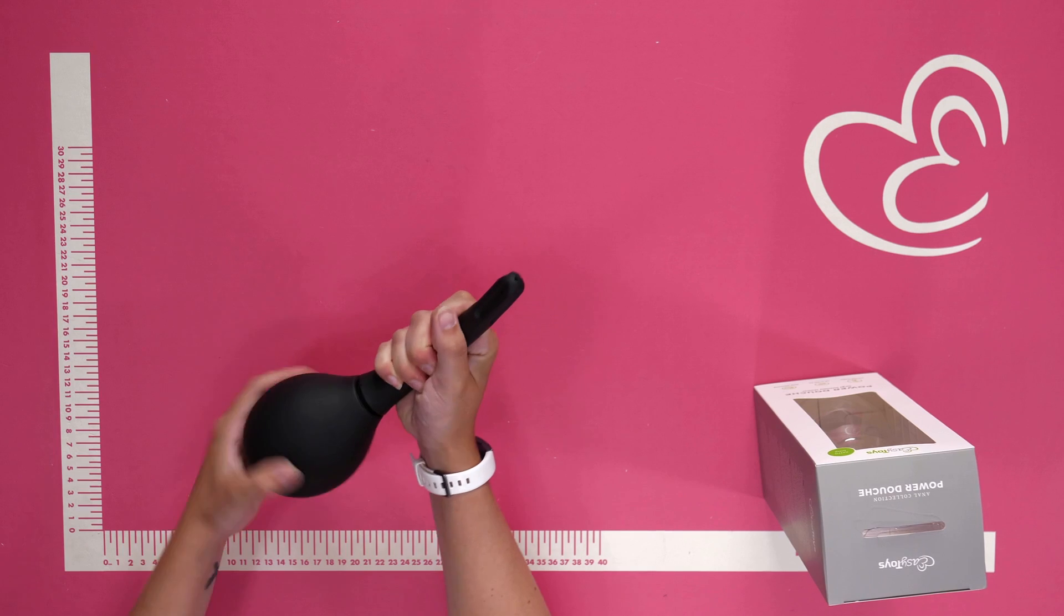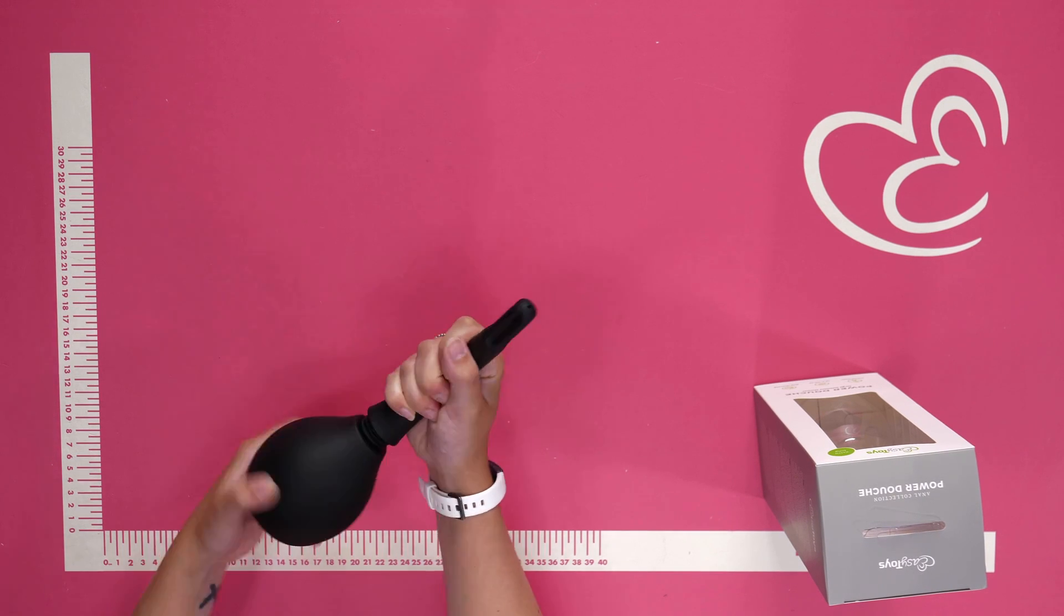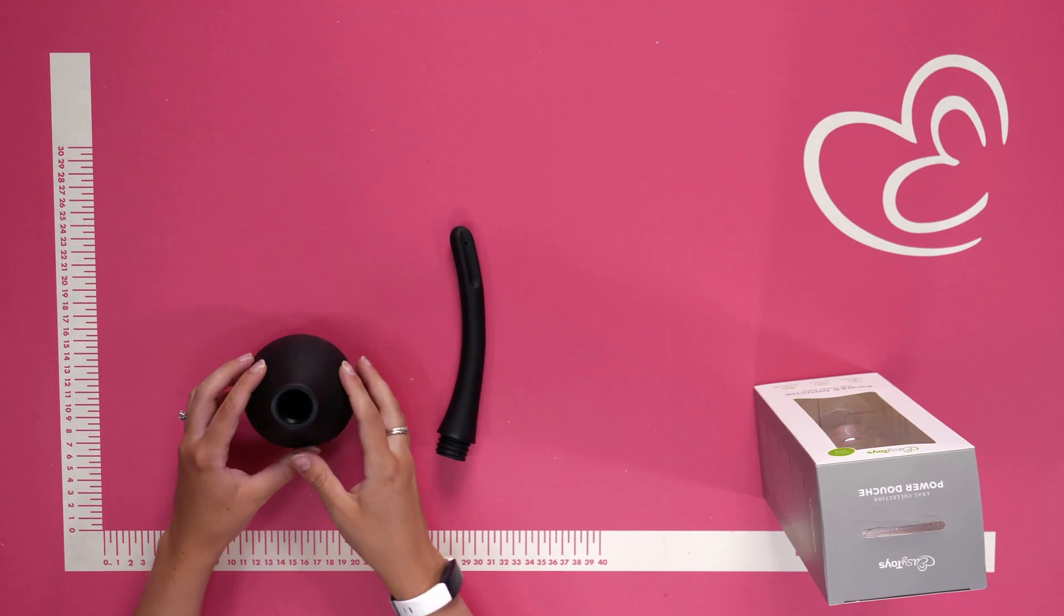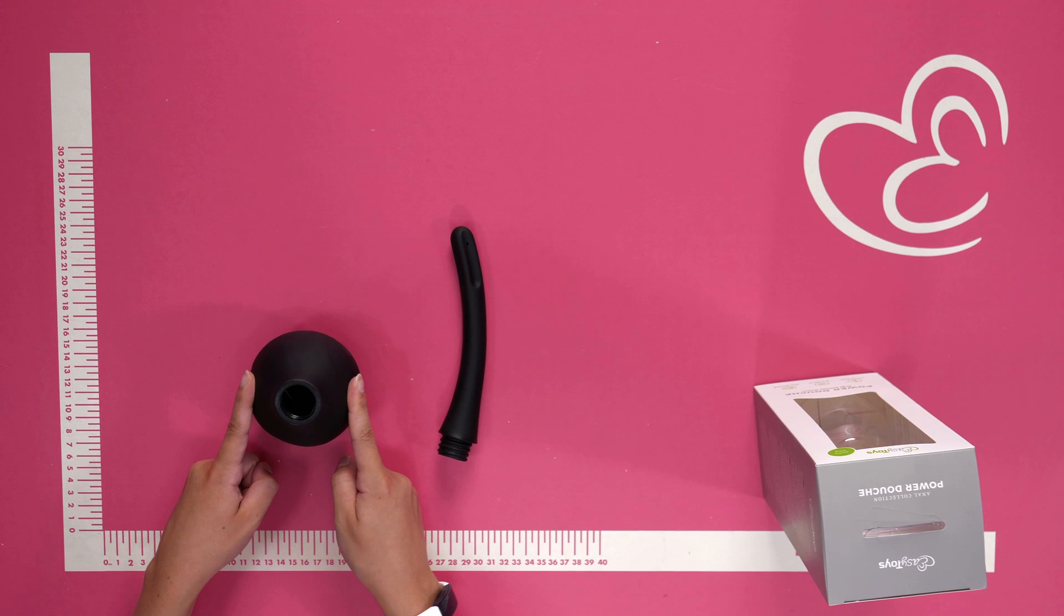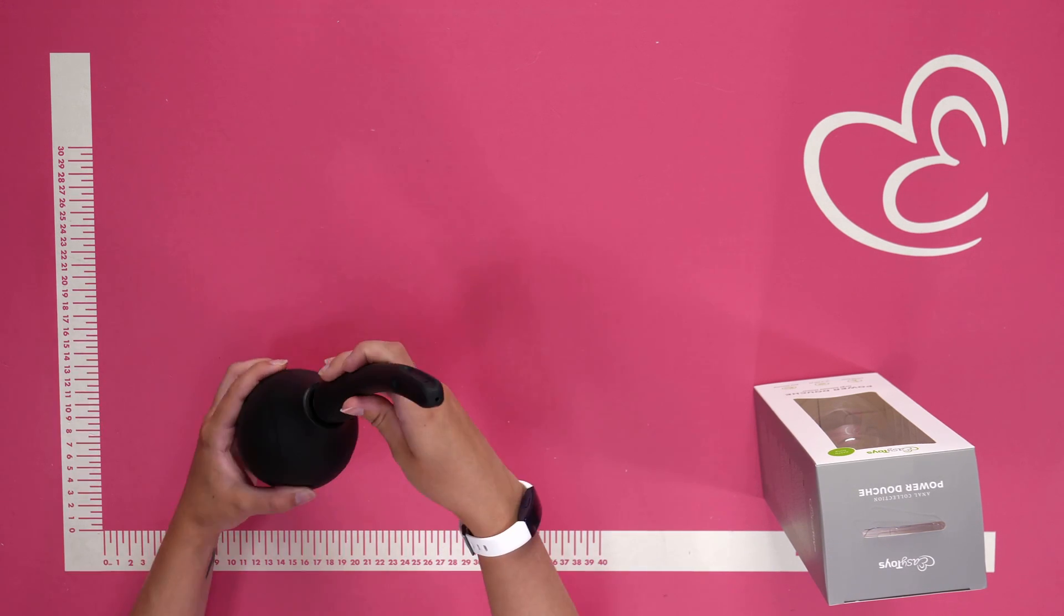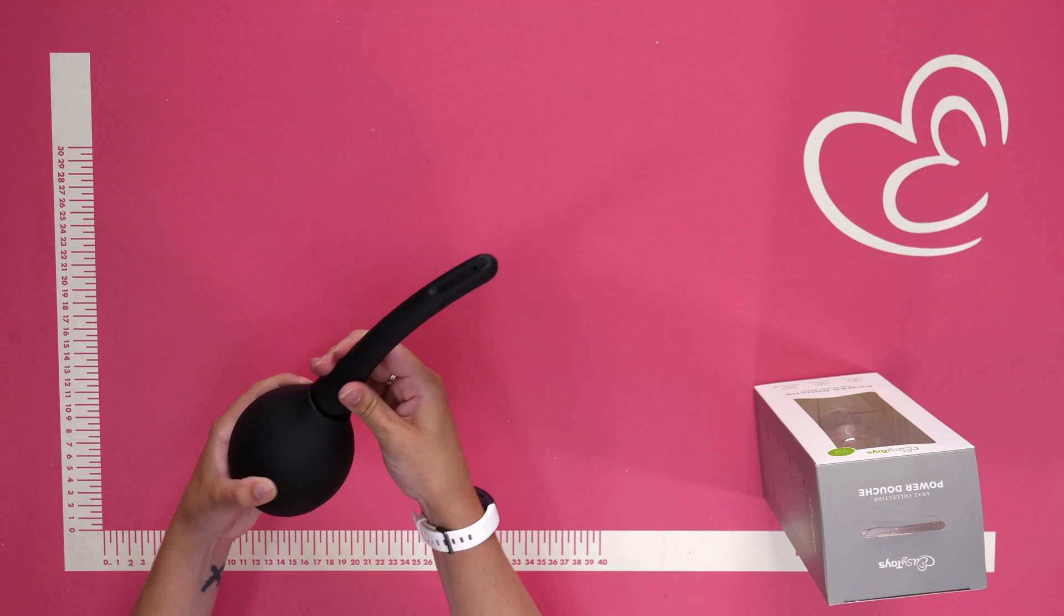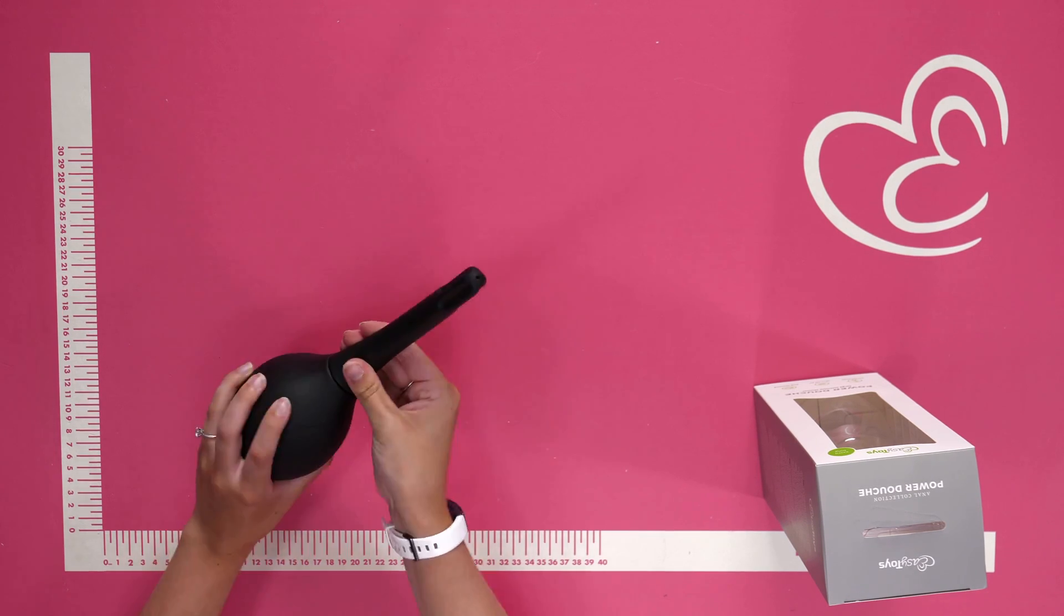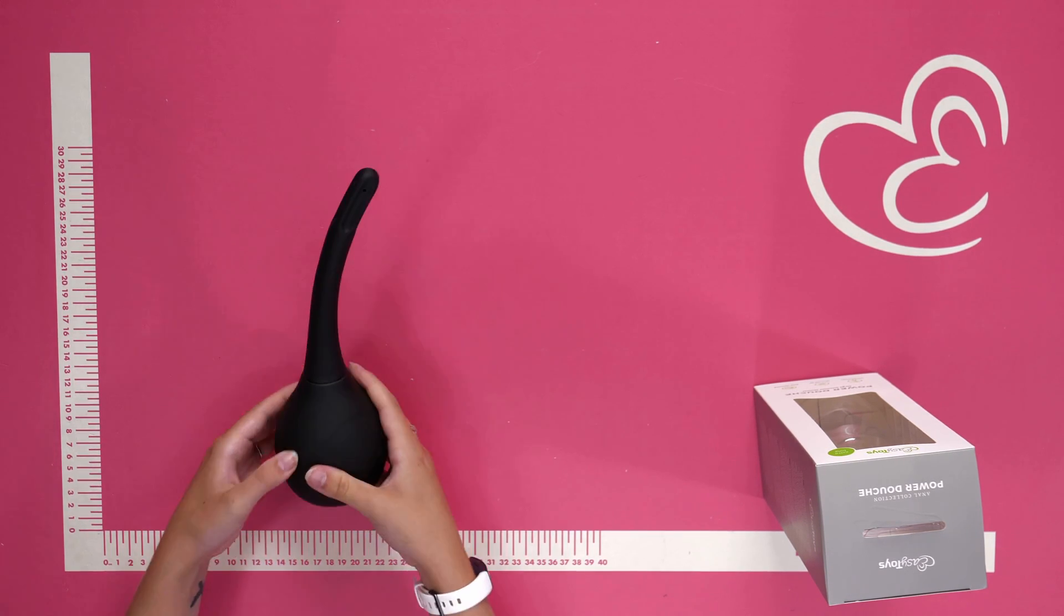To use, simply unscrew the bottom like so, fill it with lukewarm water and you're ready for an intimate shower. Once the water's in, gently screw it back on and make sure it's tight to ensure no water falls out.